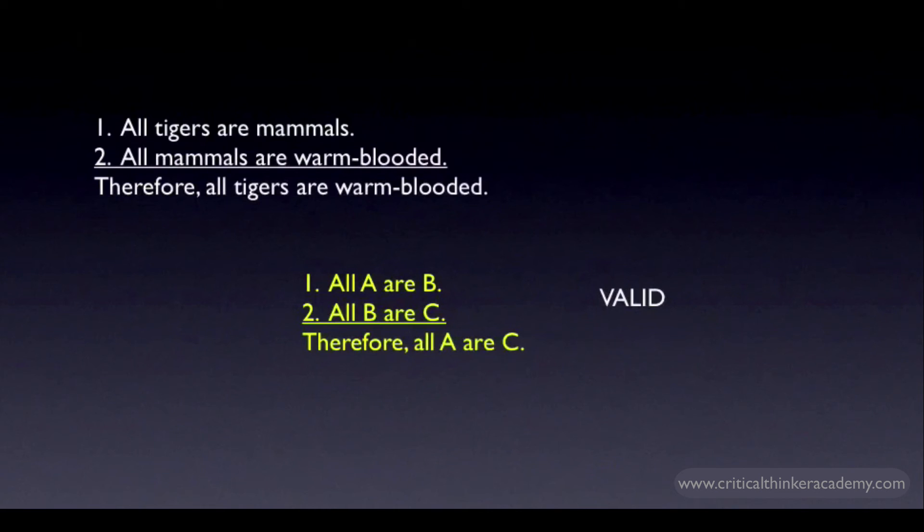The only difference between this argument form and the first valid form we looked at is that the second premise isn't a claim about an individual. It's another generalization. This argument has features similar to reasoning in a chain with conditionals. But here, we're reasoning in a chain with all.